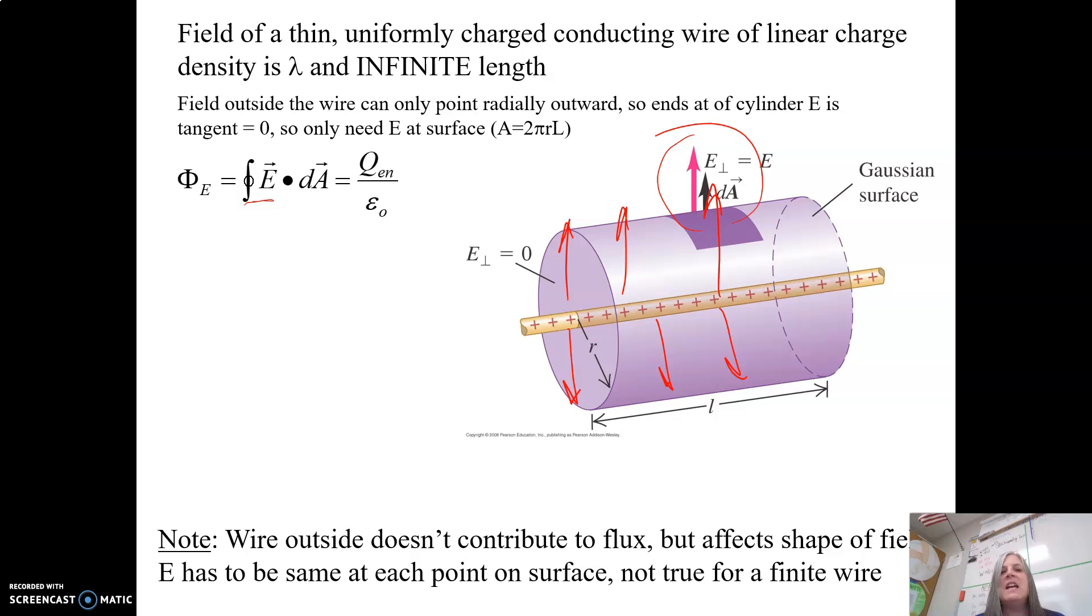So Gauss's law, right, the surface integral of E dot dA is equal to Q enclosed over epsilon naught. Now, remember that the A, this area, is the area of our imaginary surface, not the actual line of charge. It's our imaginary surface,